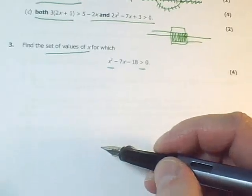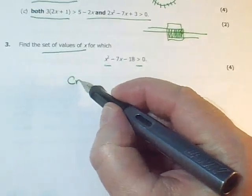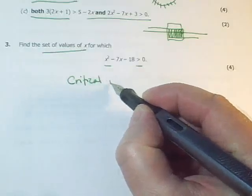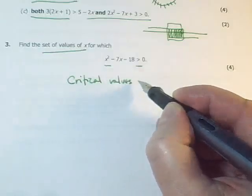We've got to find a set of values. It's an inequality. It's got an x squared in it, so this is a quadratic inequality.